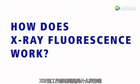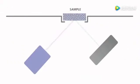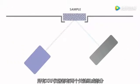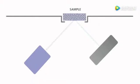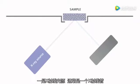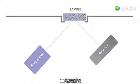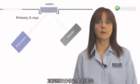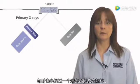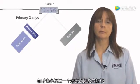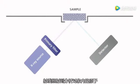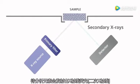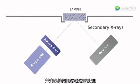So, how does X-ray fluorescence work? All XRF instruments are designed around two major components: an X-ray source, commonly an X-ray tube, and a detector. Primary X-rays are generated by the source and directed at the sample's surface, sometimes passing through a filter to modify the X-ray beam. When the beam hits the atoms in the sample, they react by generating secondary X-rays that are collected and processed by a detector.